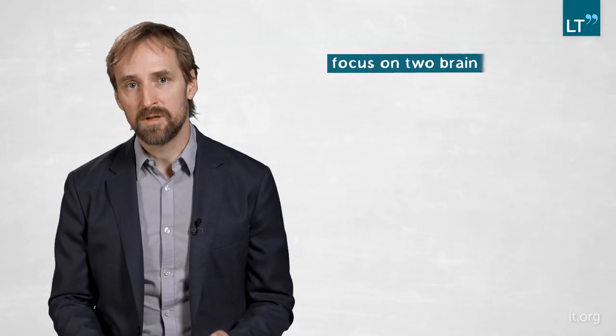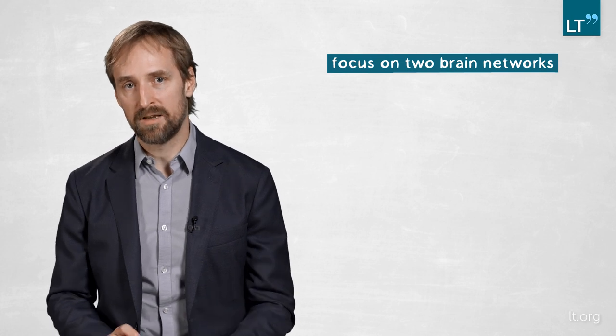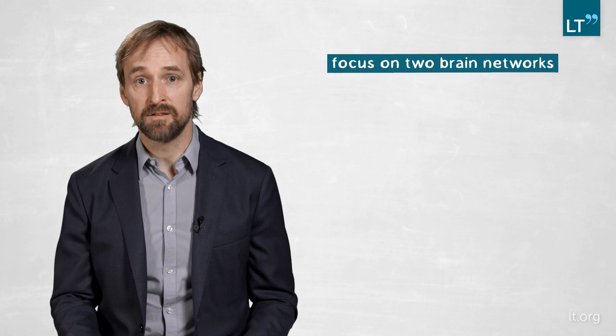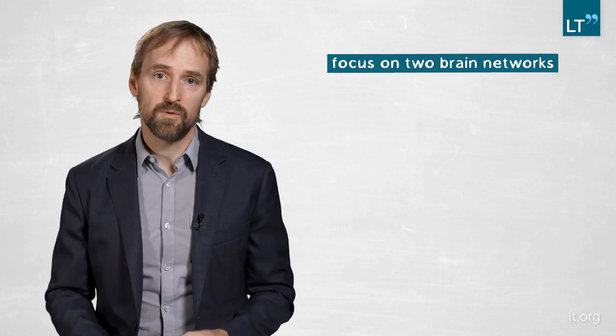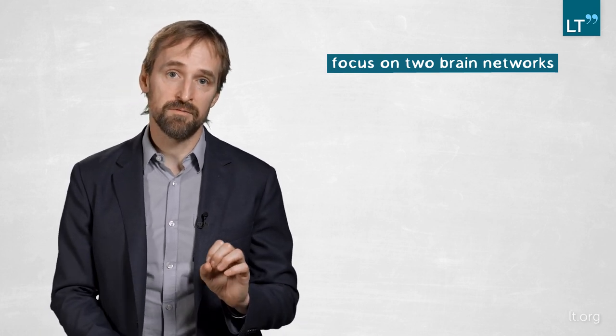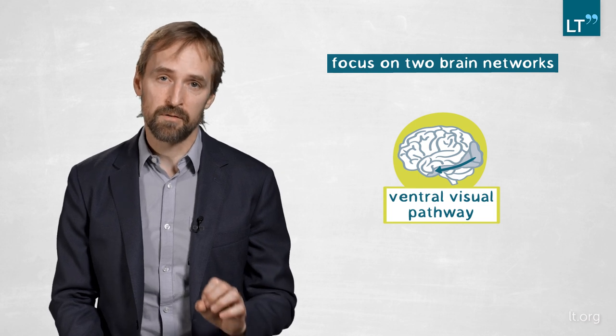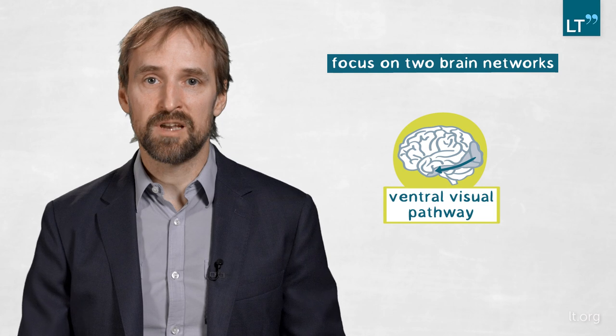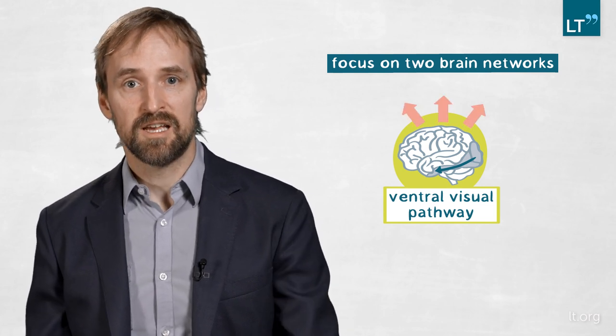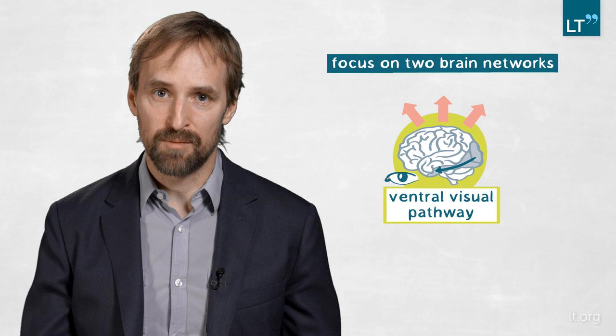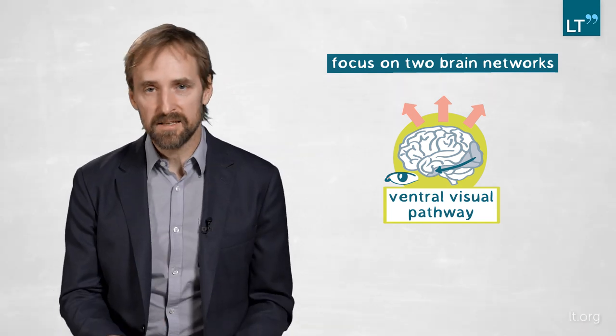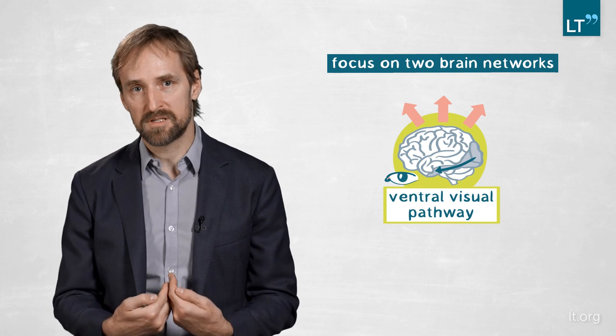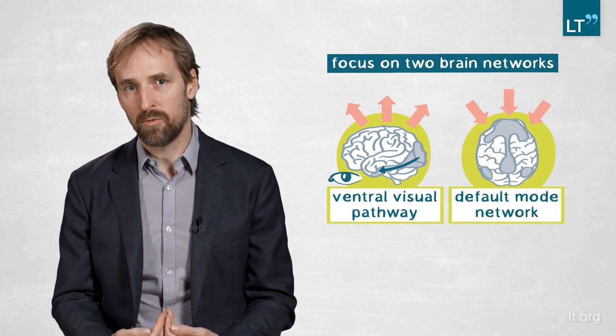We're focusing specifically on two brain networks. Because I'm interested in visual processes, we are investigating the visual system with a focus on the ventral visual pathway, the part of the brain that represents what it is that you're looking at. This is a brain network that is very extrinsically focused, active when you look at something out in the world. The second network we care about is internally focused and it's called the default mode network. This brain network is thought to be mostly involved in internally directed mentation.